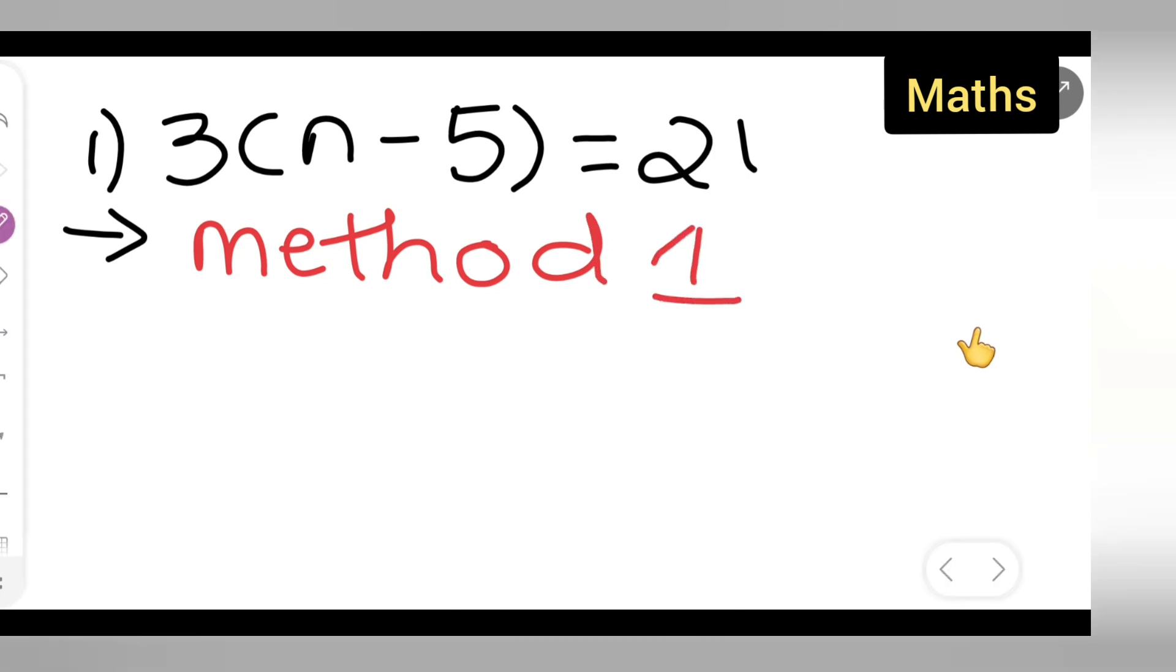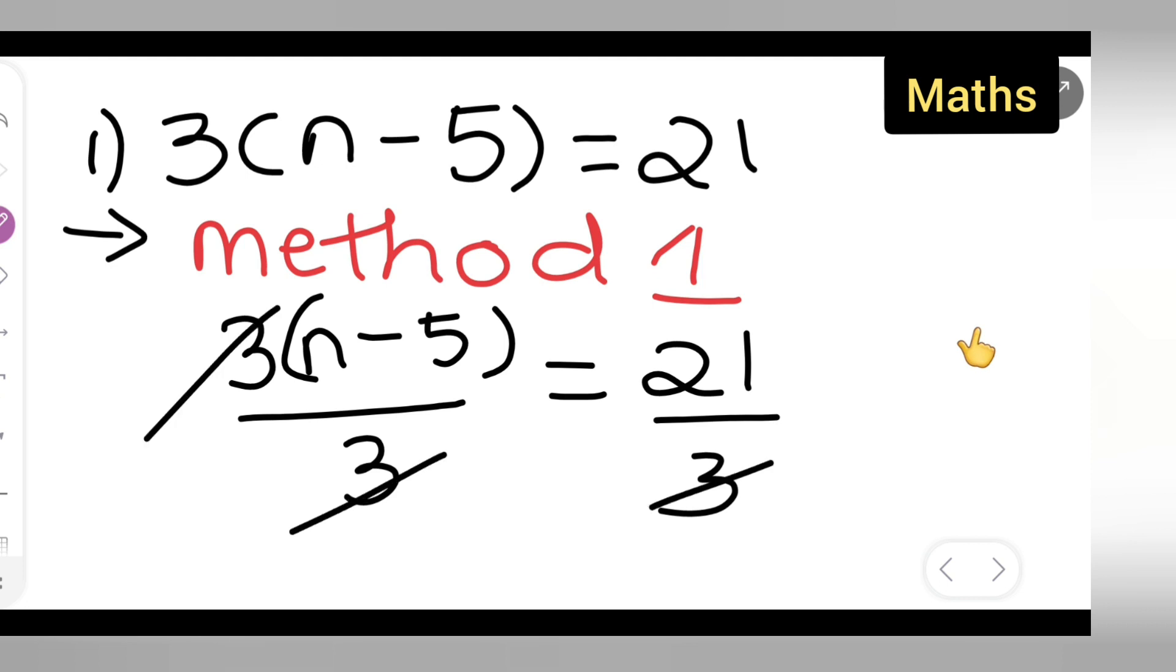You will have to see which method is useful for you. So what you can do is write down 3n minus 5, divide this by 3. So on both sides, you will have to divide by 3. Then what you will have to do is cancel this 3 and 3. 3 ones are 3, 7s are 21. So you are left with...